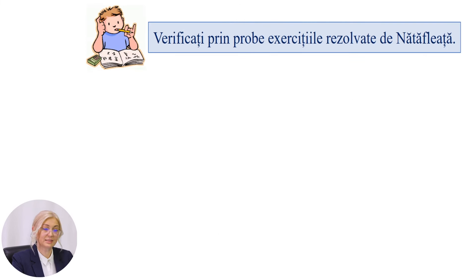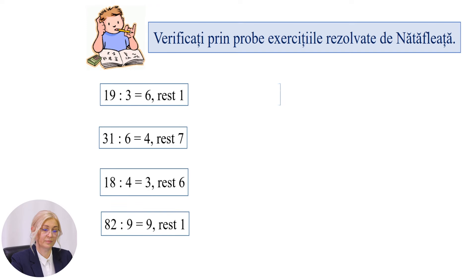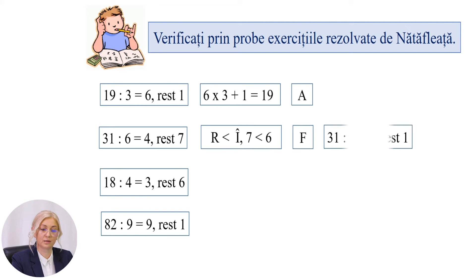Vă propun să verificați exercițiile rezolvate de Înătăfleață. 19 împărțit la 3 este egal cu 6 rest 1. Verificăm: 6 împărțit la 3 plus 1 este egal cu 19, adevărat. 31 împărțit la 6 este egal cu 4 rest 7. Restul este mai mic decât împărțitorul, deci 7 este mai mic decât 6, fals. Care este rezultatul corect? 31 împărțit la 6 este egal cu 5 rest 1, deci 1 este mai mic decât 6, adevărat.